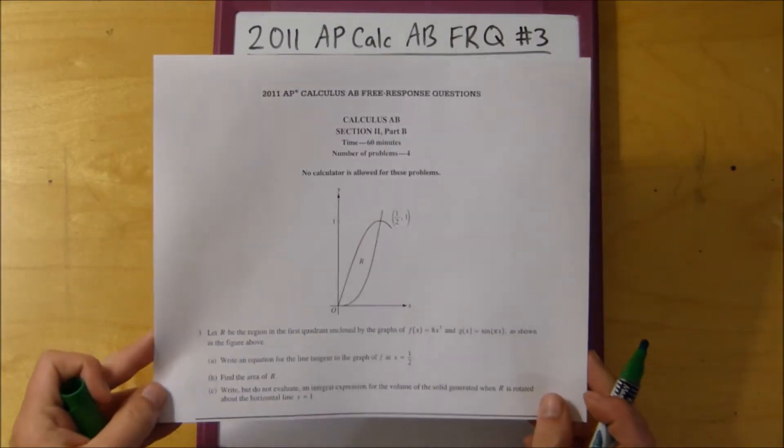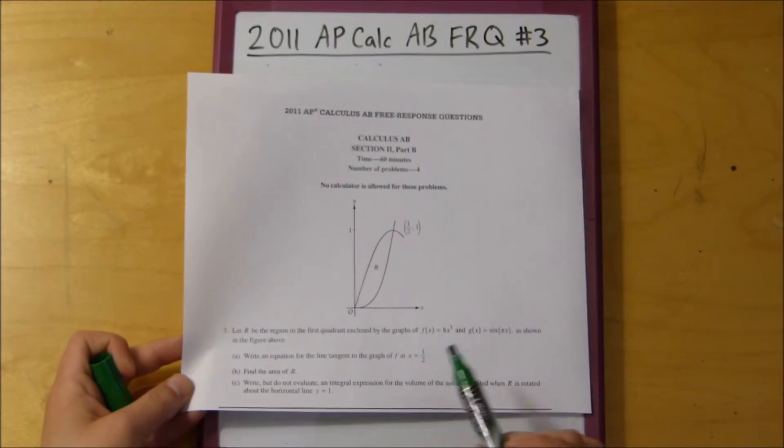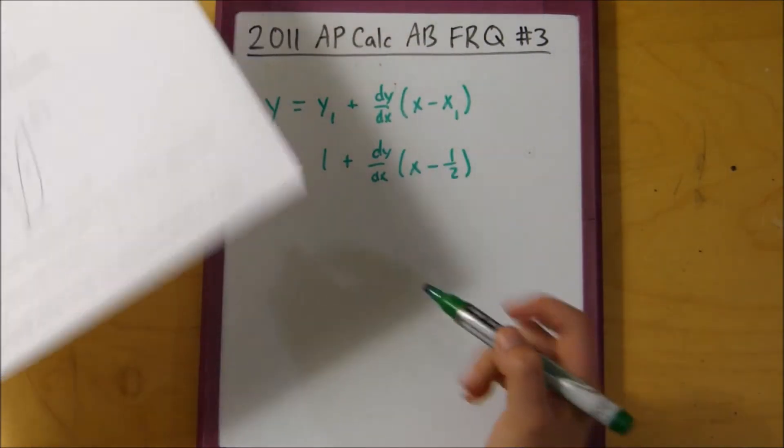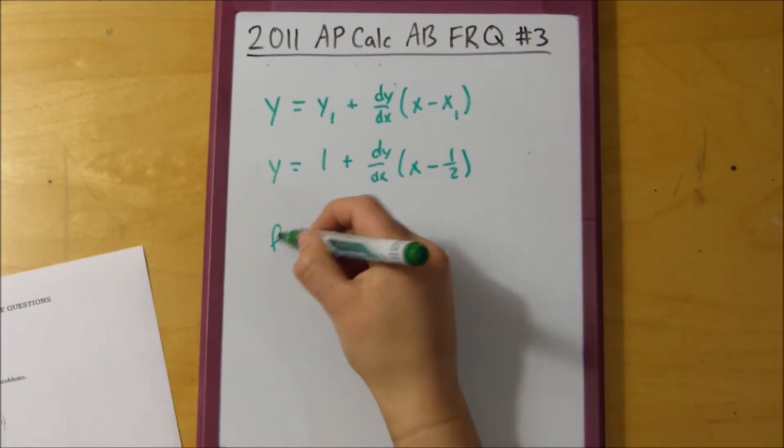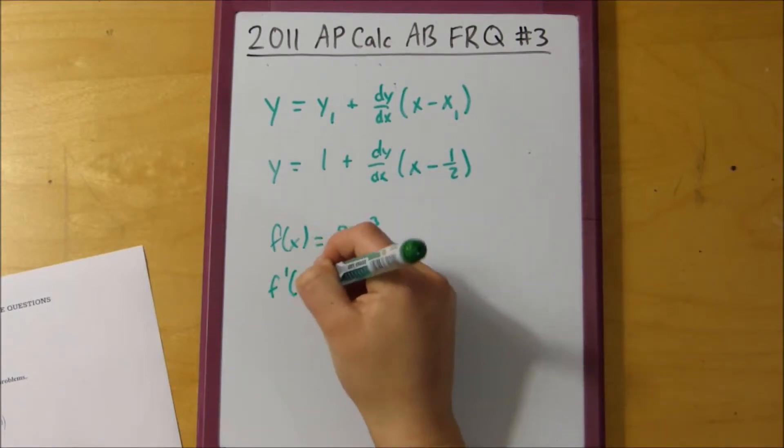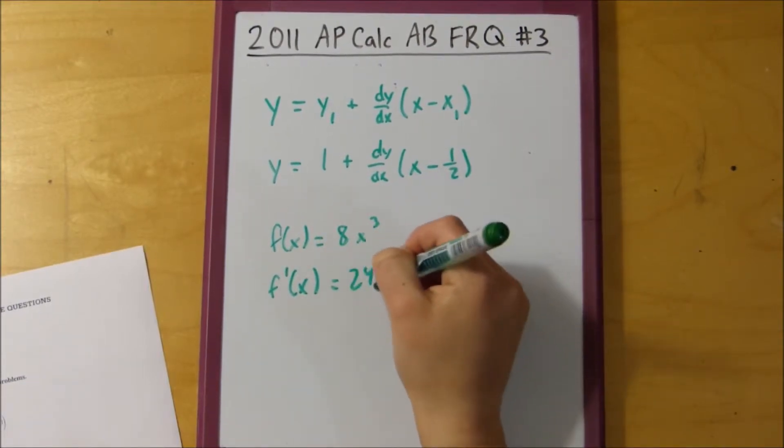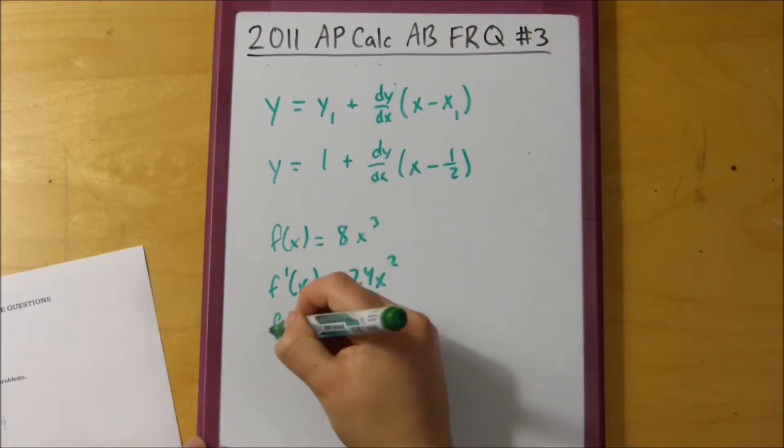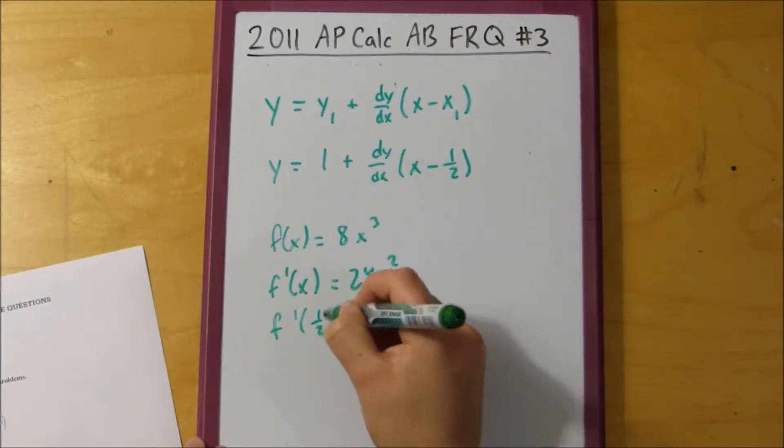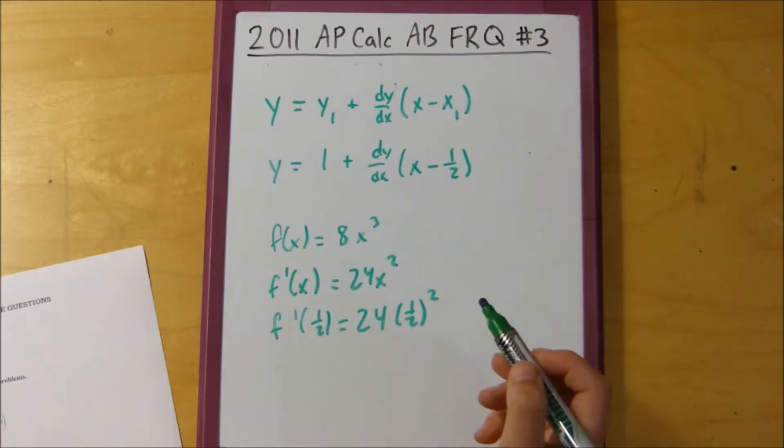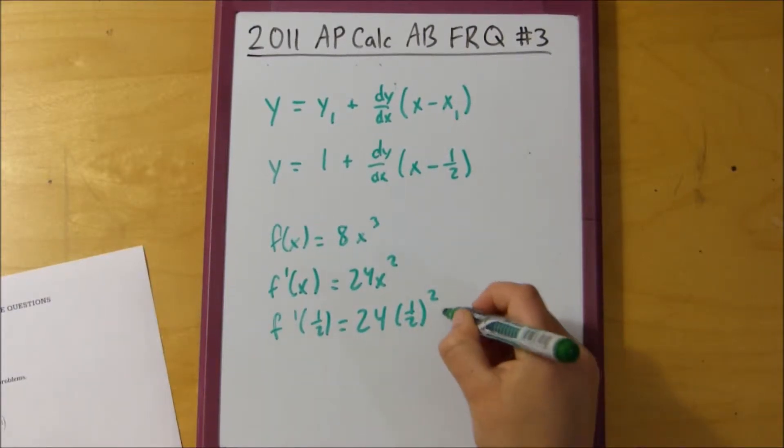What we have to do is take the derivative of F of x to find our slope. So if F of x equals 8 times x to the third, F prime of x is 24x squared, and then if we plug in a half, we have F prime of 1 half equals 24 times 1 half squared. 1 half squared is 1 fourth. A fourth times 24 is 6.